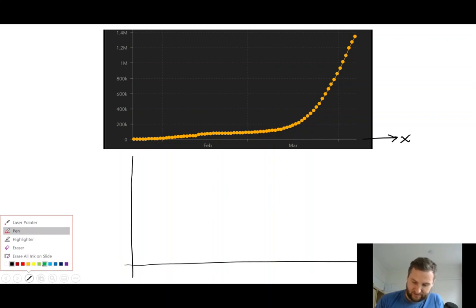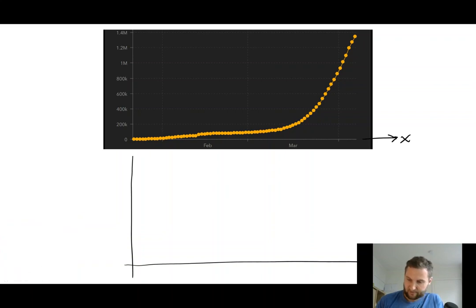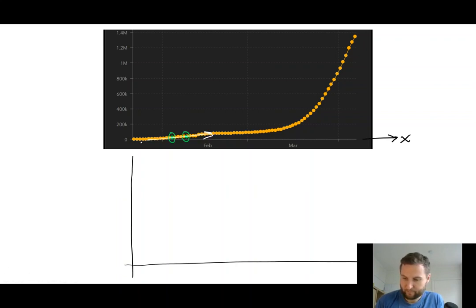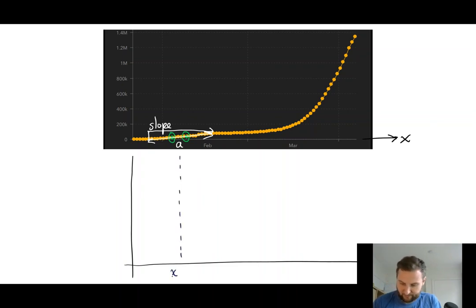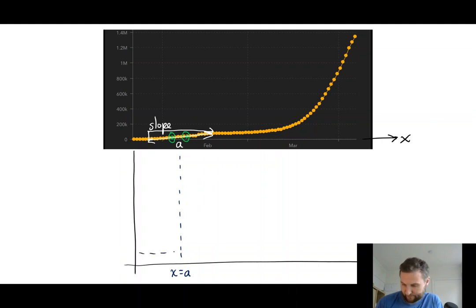First, let's pick some points and calculate some slopes. If I'm going to calculate the slope somewhere around here, let's pick two points reasonably close together and draw a line through them. I can calculate the slope of this line by a rise over run calculation. Let's say that this point is called A — I'll bring A down to the x-axis. The value of this slope goes on the y-axis; it looks like it's less than one, so this is my slope, or f at A, whatever that output value is.